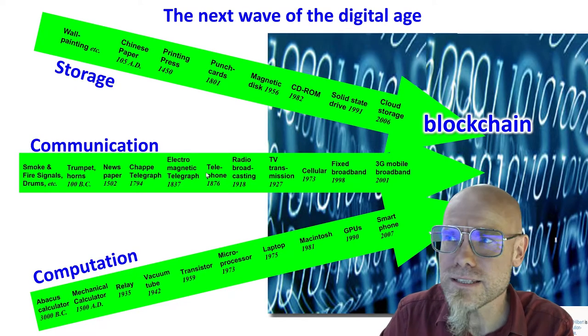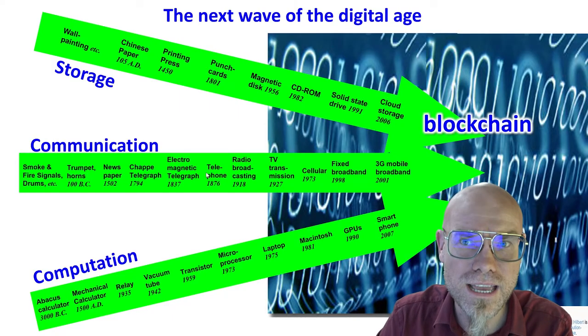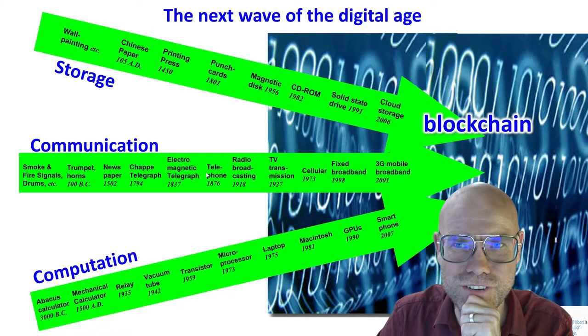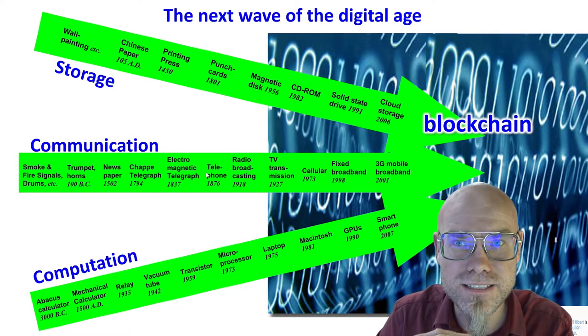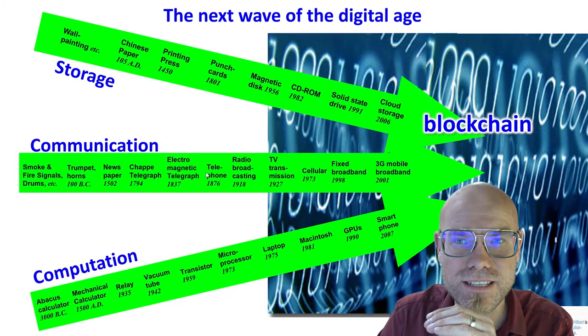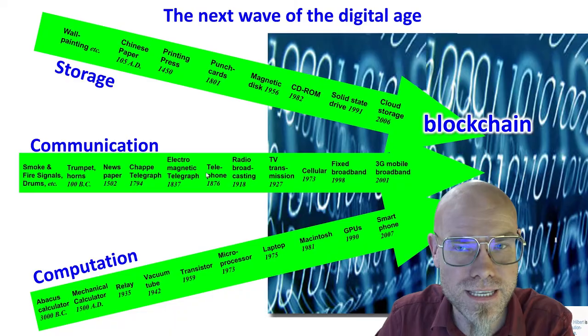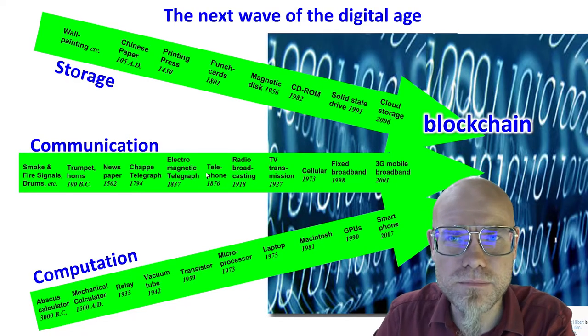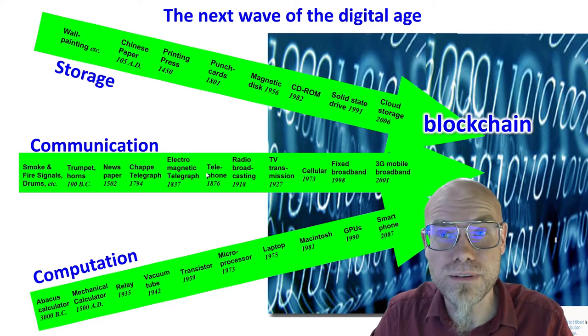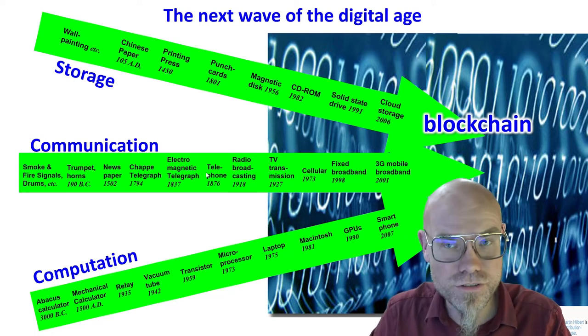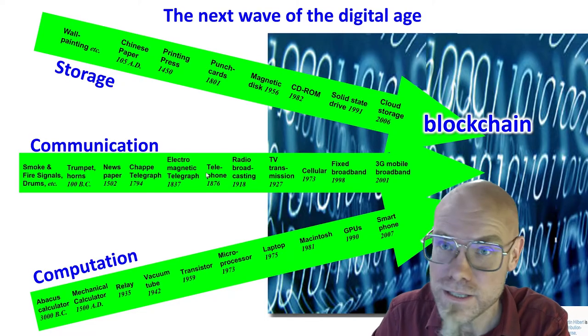The blockchain is without a doubt the most amazing storage solution I have ever come across starting in the digital age now for over 25 years. It gives us a decentralized memory of what happened in the past and immutable, in some sense, memory of what happened in the past. And that has vast implications for new applications. For example, the most obvious one being a property rights system.